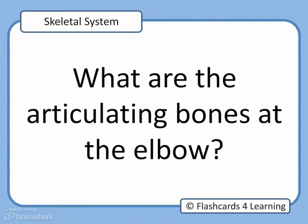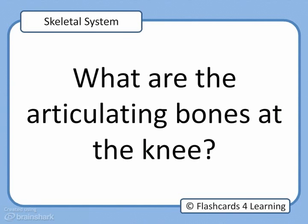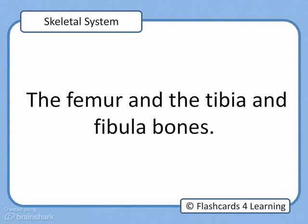What are the articulating bones at the elbow? The humerus and the radius and ulna bones. What are the articulating bones at the knee? The femur and the tibia and fibula bones.